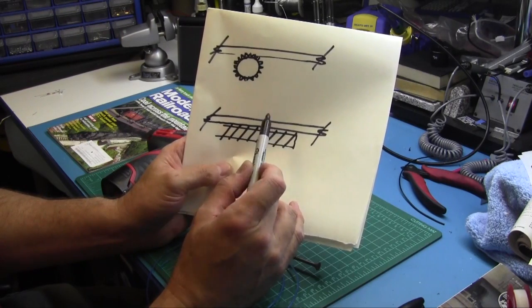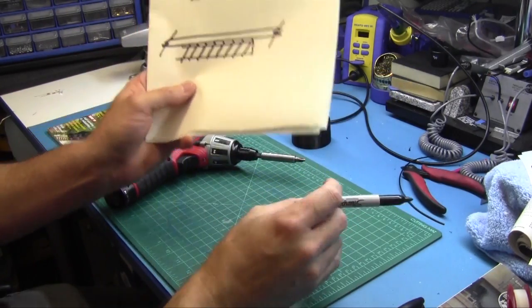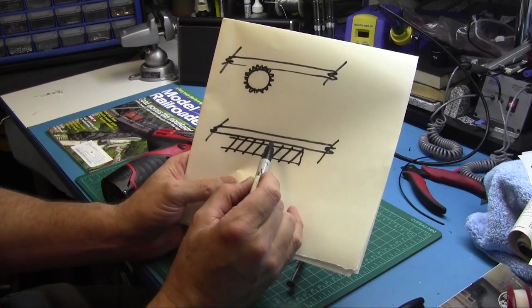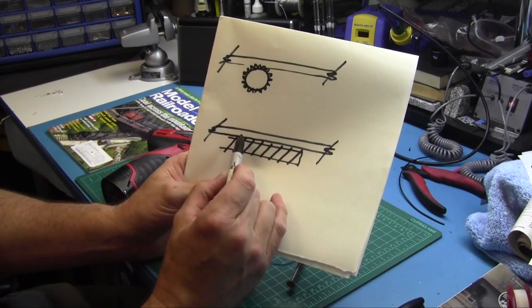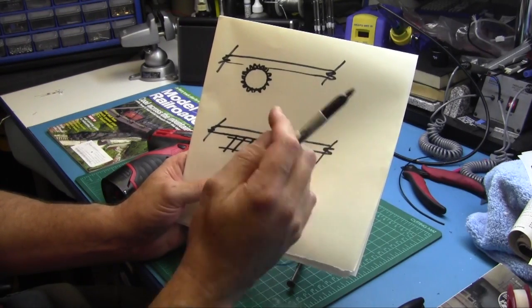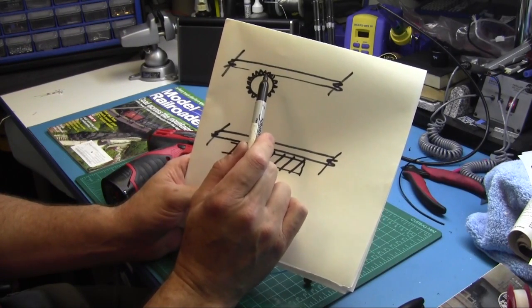Another thing too is the bite on these teeth has to be so little. Right now I just did this quickly on the drill press, but if this was precisely made, the amount of engagement of the tooth, because there's so many of them, I think would be so slight. It could be a lot less than what it is on this kind of drive system.